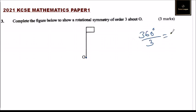So we need to draw a figure here. We measure 120, you draw another one here 120 like that, then the last one will be this one. That will be a figure that shows rotational symmetry.